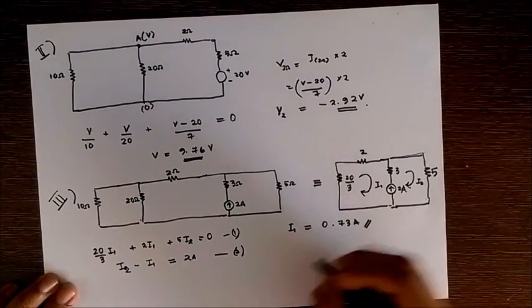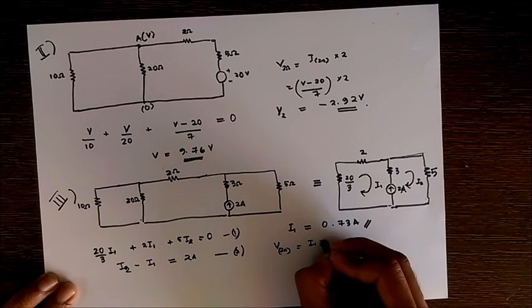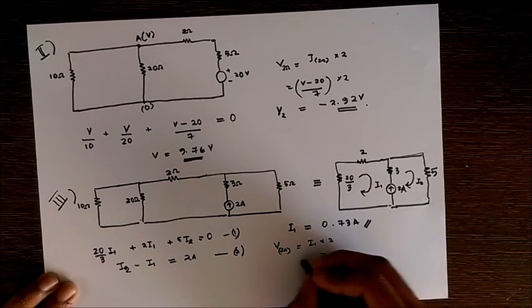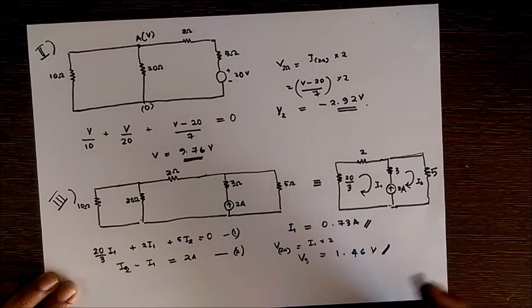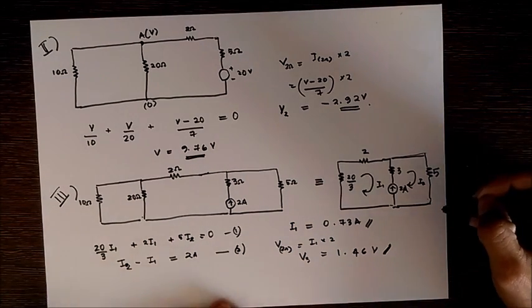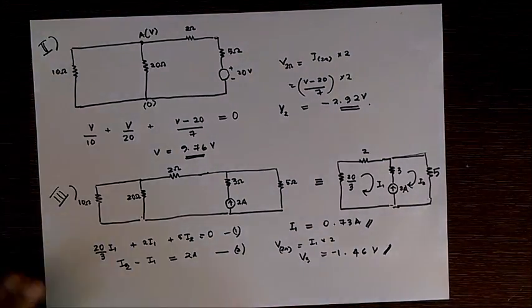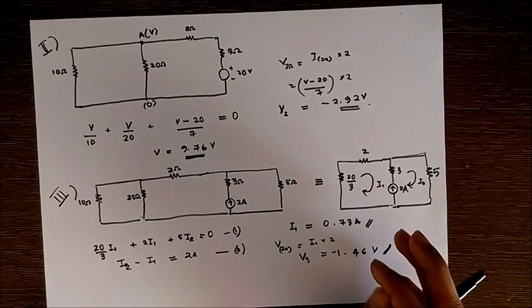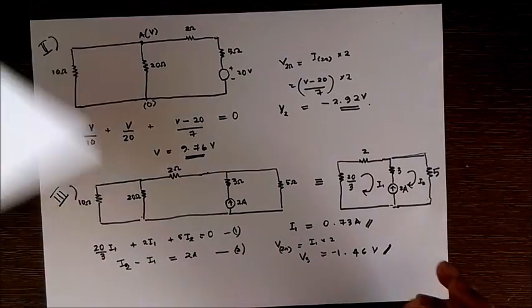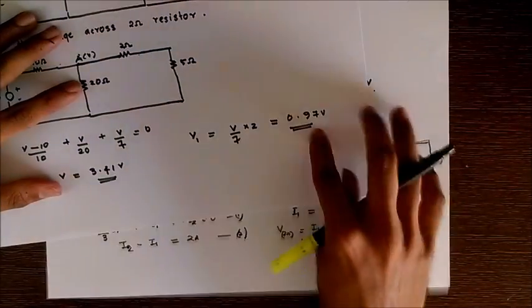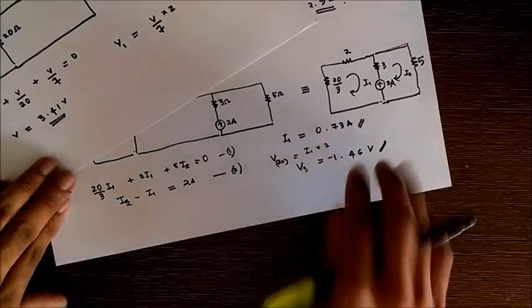Now with these two equations, we solve and we get the value of I1 as 0.73 amperes, which in turn gives us the voltage drop across 2 ohm as I1 into 2. That is V3 equal to 1.46 volts. As the direction of voltage is similar to V2, we put a negative sign.